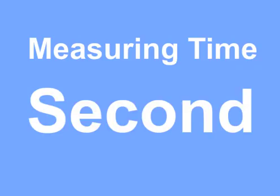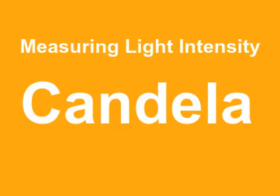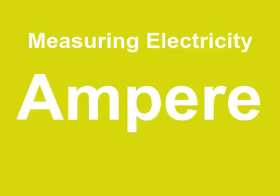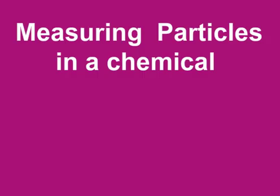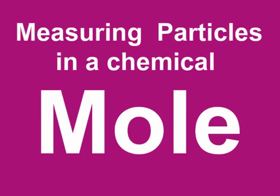For measuring time, we use the second. For measuring light intensity, we use the candela. For measuring electricity, we use the ampere. And for measuring the amount of particles in a chemical, we use the mole.